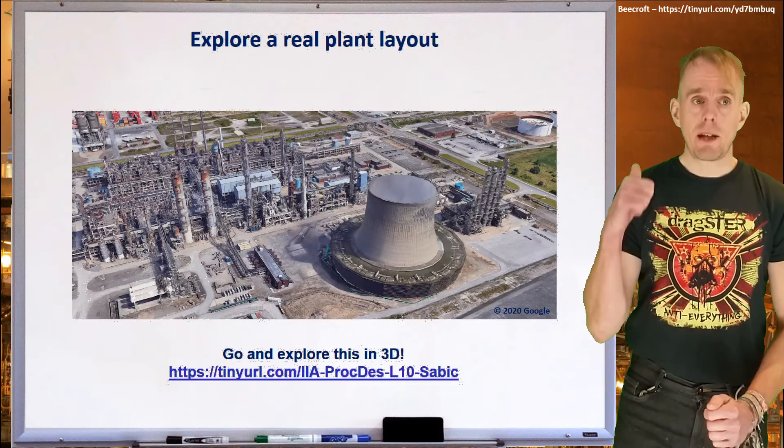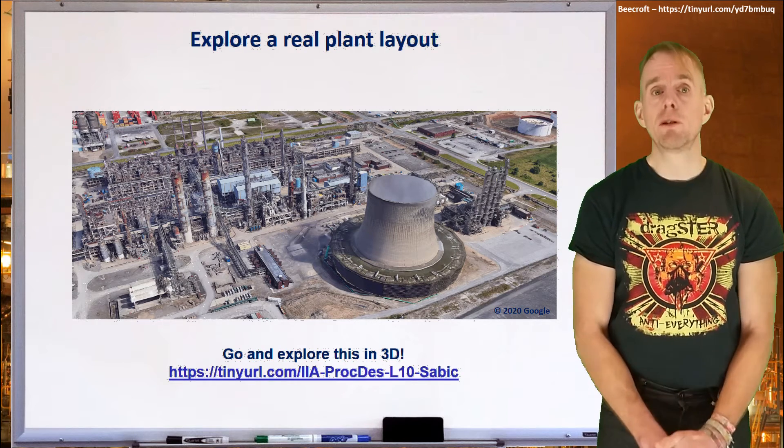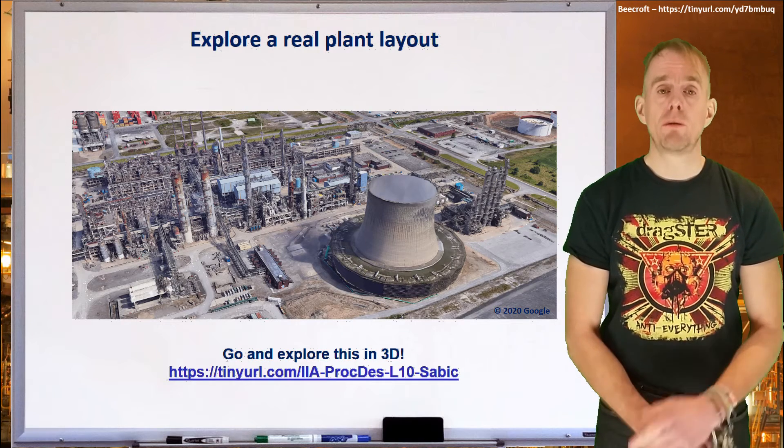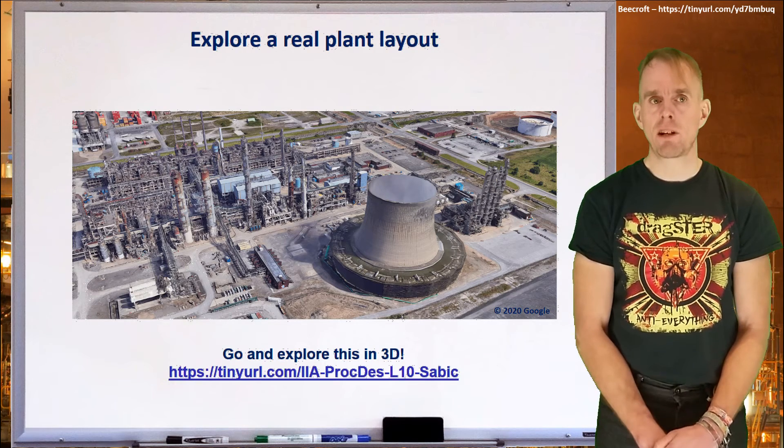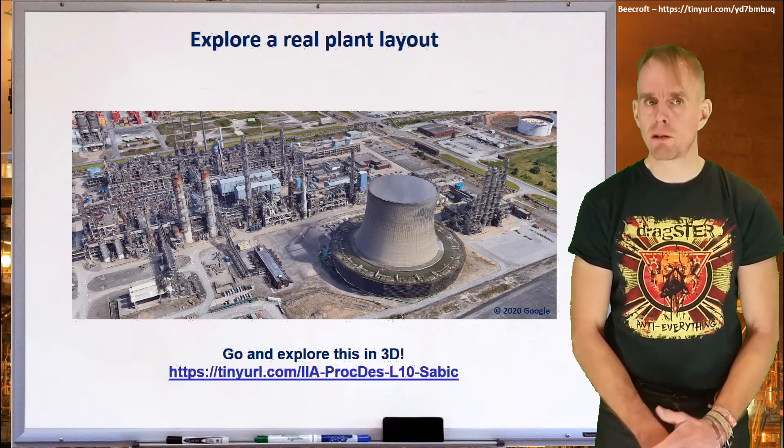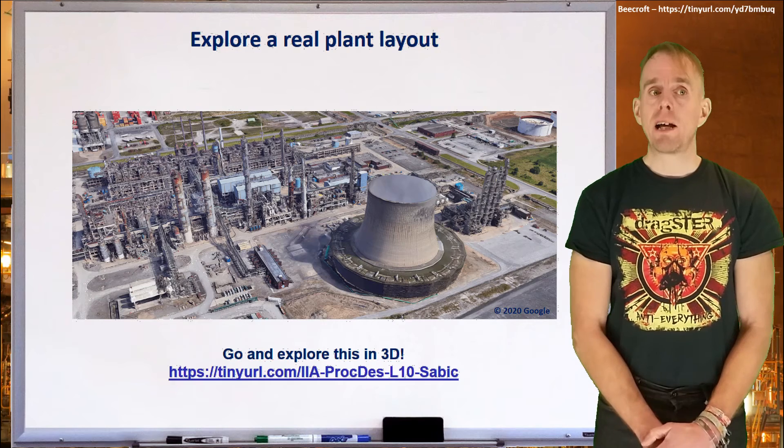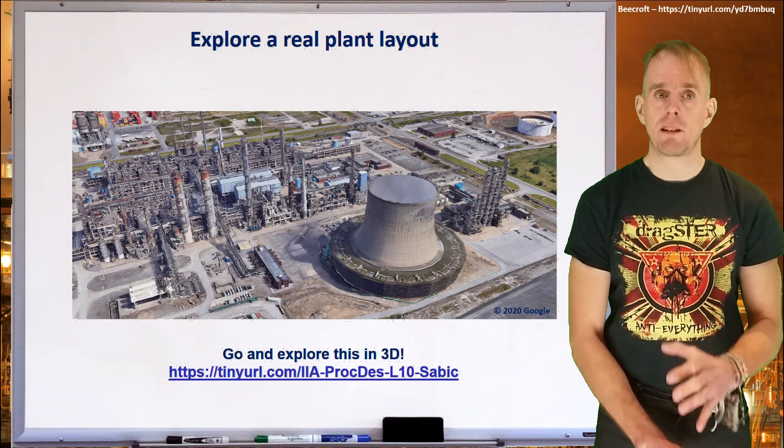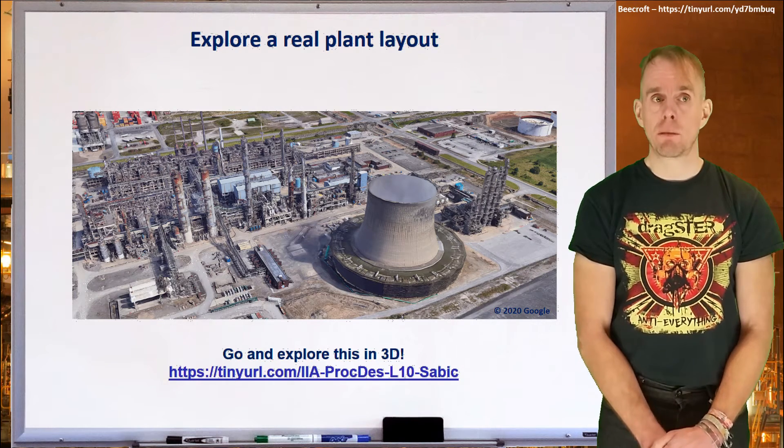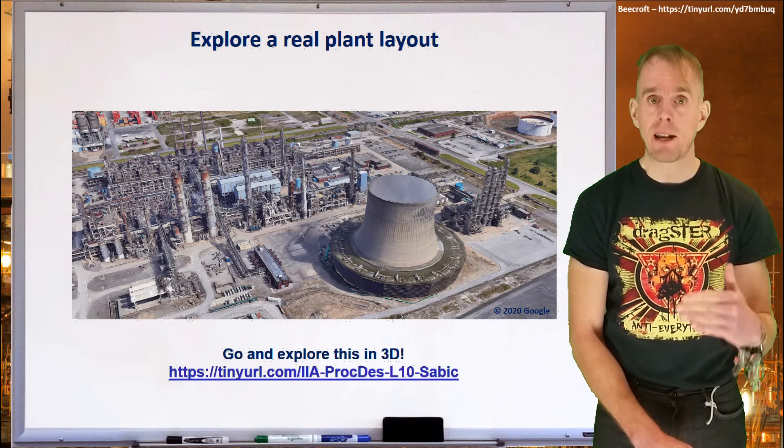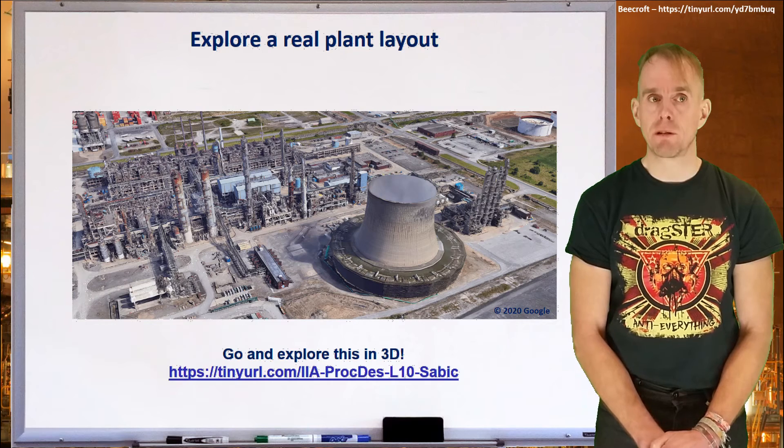OK, so here on the whiteboard I've put an image from Google Earth, and I've given you a link. This link is to a naphtha cracker in Teesside, which is a very large plant. It has high temperature sections, it has low temperature sections, it has a big cooling tower, it has flare stacks, it has racks of heat exchangers, racks of distillation columns, and there is sufficient data now within Google Earth for you to effectively walk around this virtually. Go and have a look how distillation columns are placed, where they are placed with respect to plant and access routes.